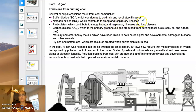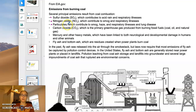Nitrogen oxides contribute to smog, respiratory illnesses, and some acid rain production. Another issue you may be familiar with from history is the fact that burning coal produces a lot of soot — more technically, tiny particles of unburned material — that accumulates on surfaces.